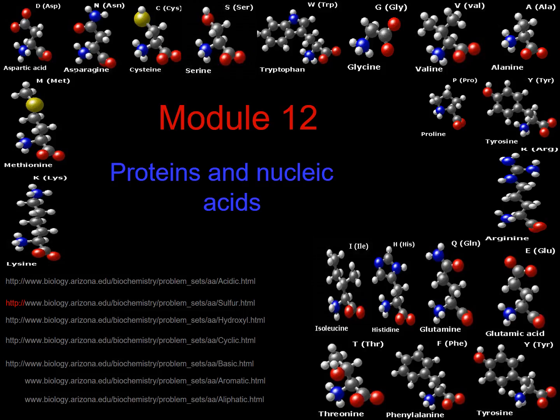Proteins and nucleic acids are both polymers. Proteins are polymers made up of monomers called amino acids. On the screen you see the 20 amino acids used to make the proteins in our bodies. The order in which these amino acids are attached to each other is very important for the work of a particular protein. Your body needs a way to keep track of how to make these proteins, and that's where the nucleic acids come in. Nucleic acids like DNA and RNA are polymers of monomers called nucleotides, and the nucleotide order encodes the order of the amino acids for the proteins.